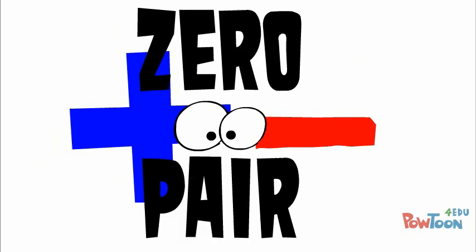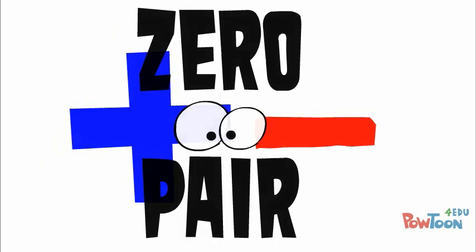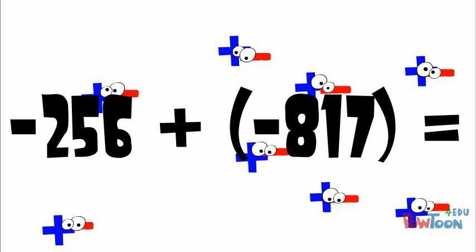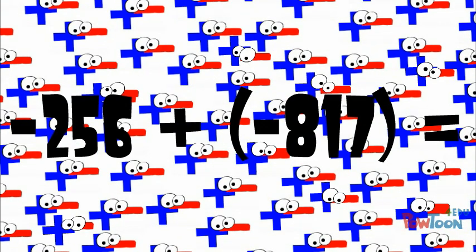To help us out, our friend the zero pair is going to step in. In any problem, there are always a few zero pairs hiding out in case they are needed. In fact, there are tons of them just hiding out for whenever we need them, since adding zeros to a problem doesn't change the answer.